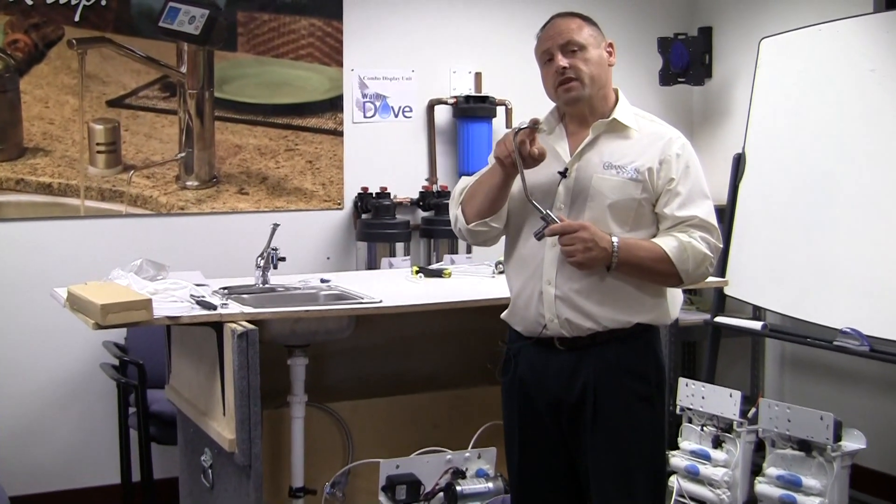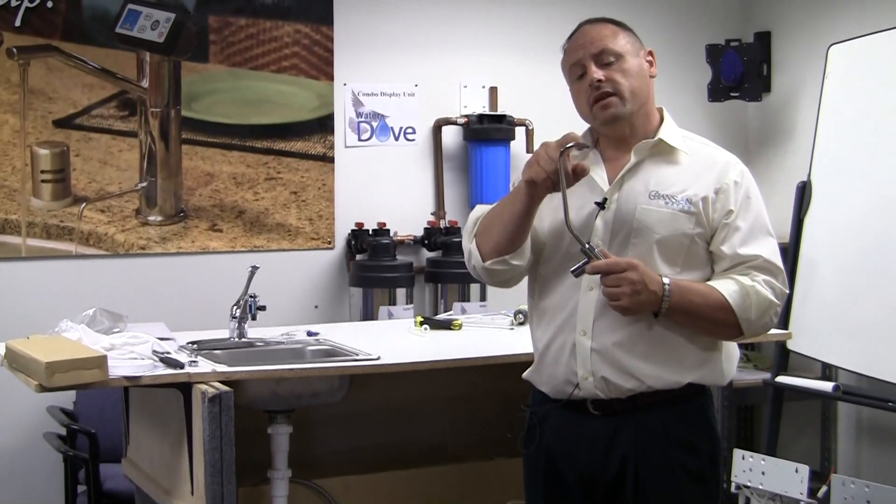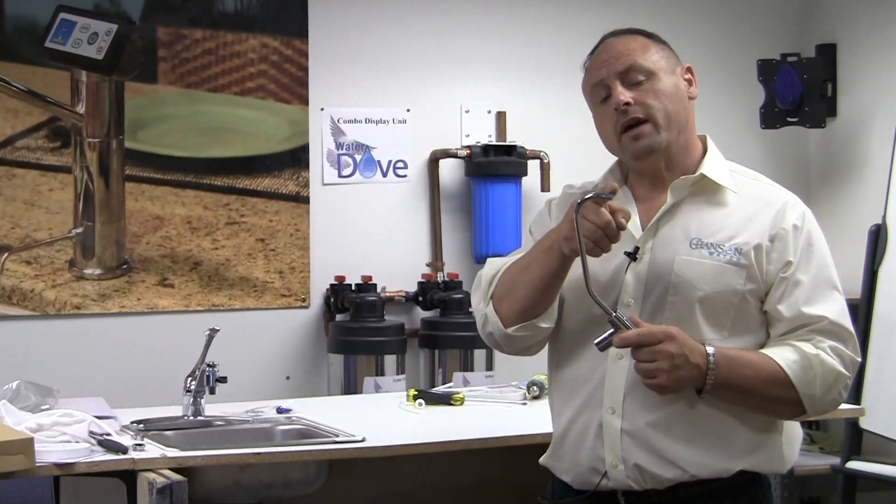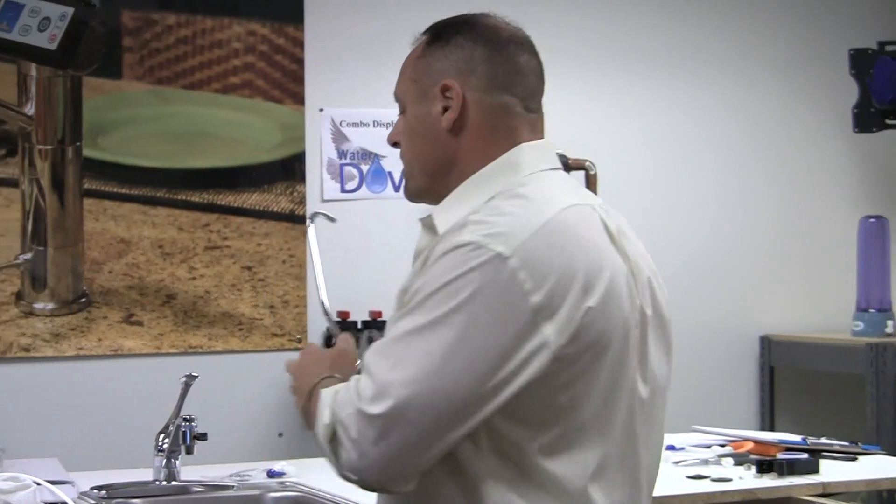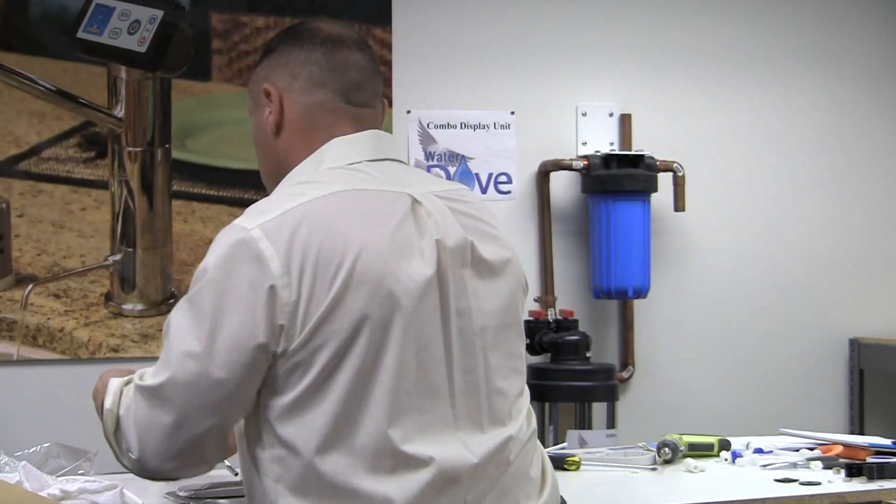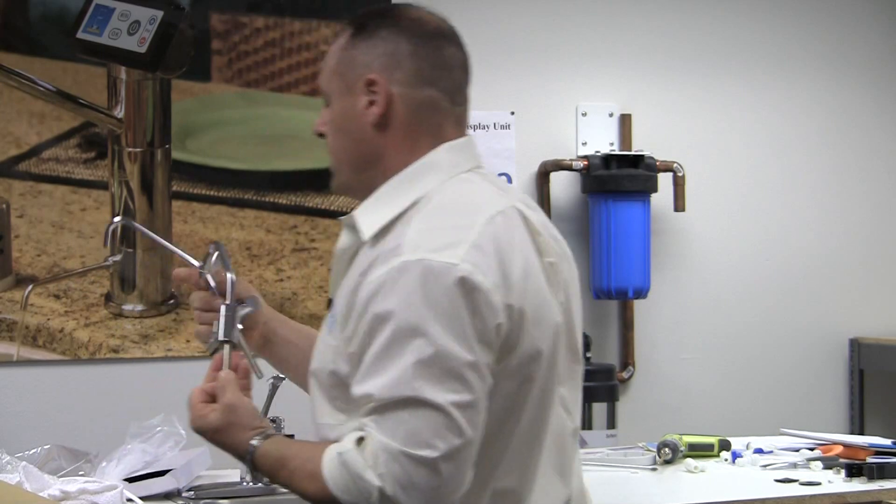When this faucet comes to you, it's going to have a little tip on there and you might be able to see on the video that there's some scrapes on the tip here. The reason there is, I'll show you what a brand new one looks like versus this one. See how this one has the tip and this one does not?